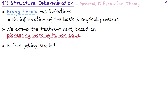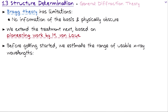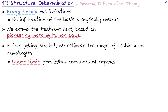We will now extend our treatment to the Laue description. The pioneering work was done by Max von Laue, who was awarded the Nobel Prize more than a century ago. Before we get started, let's say a few words about the sweet spot of usable x-ray wavelengths. We estimate the range of usable wavelengths: the upper limit comes from the lattice constants of typical crystals, which are on the order of less than five nanometers. From the Bragg condition, we need wavelengths smaller than 2d, so less than 10 nanometers.